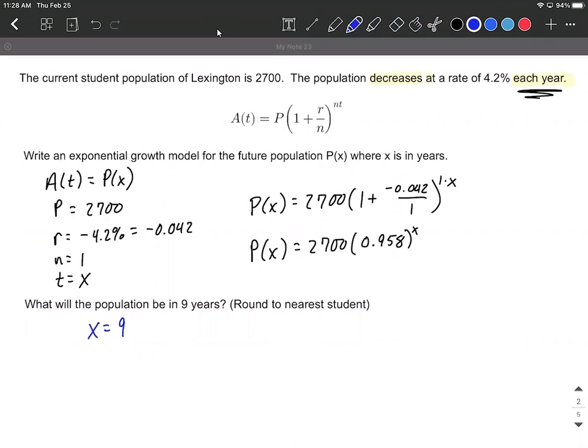So we're going to plug into our formula. Say P of 9 equals 2,700 times 0.958 raised to the 9th power. Get the calculators out. And that's going to be approximately 1,835 students.